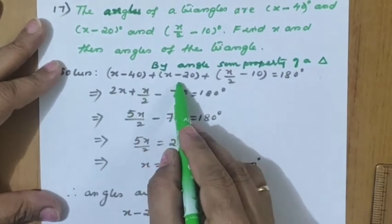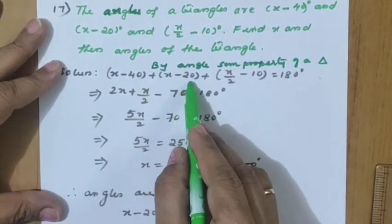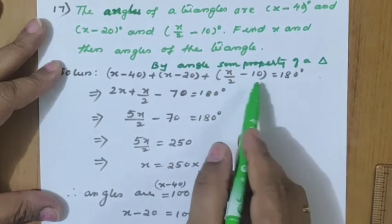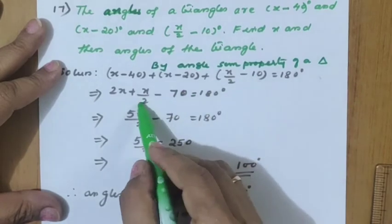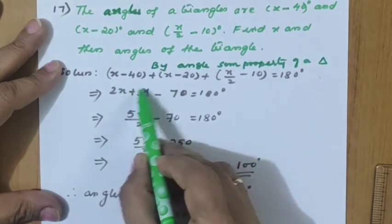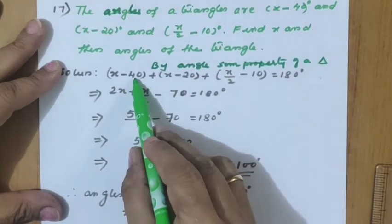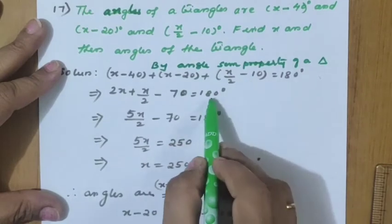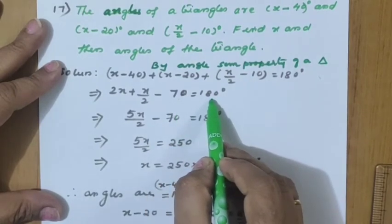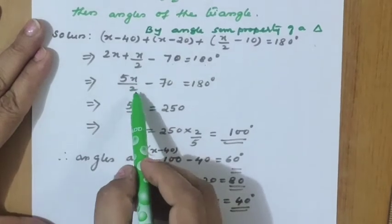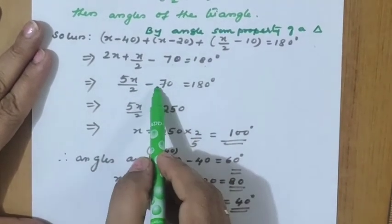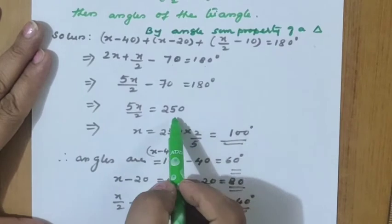(x − 40) + (x − 20) + (x/2 − 10) = 180 degrees. Arranging the x terms: 2x + x/2, and the constants: −40 − 20 − 10 equals −70. So 5x/2 minus 70 equals 180 degrees.